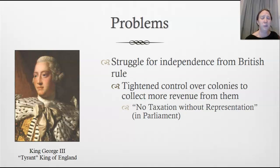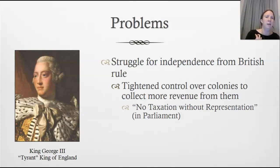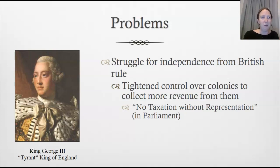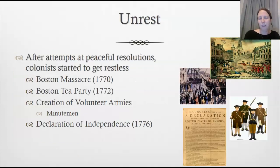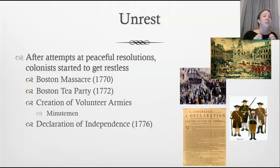Britain was struggling in debt and tried to collect money by taxing sugar, tea, and stamps — requiring colonists to pay for stamps on just about everything they bought. This was meant to raise money for Britain, but it just developed resentment in the American colonies. Unrest started to show itself after the colonists tried to peacefully resolve these issues.